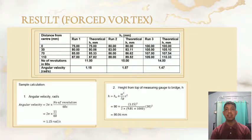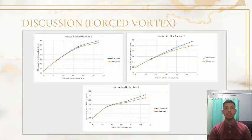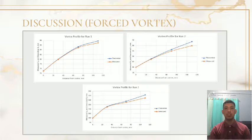My name is Muhammad Nur Shafiq bin Zainal and I will continue the lab presentation. Based on the table above, the data obtained after doing the calculation for angular velocity and theoretical HV is shown, and sample calculations were performed. For the discussion, to study the vortex profile of forced vortex and its relationship with angular velocity, the forced vortex experiment was initiated. To create a forced vortex, a paddle is connected to the bottom of the tank, resulting in different sets of data.